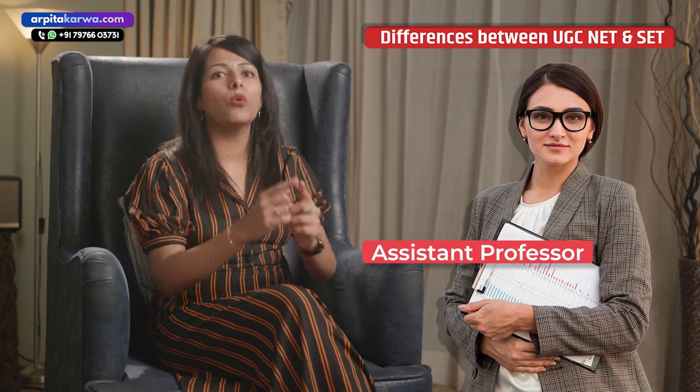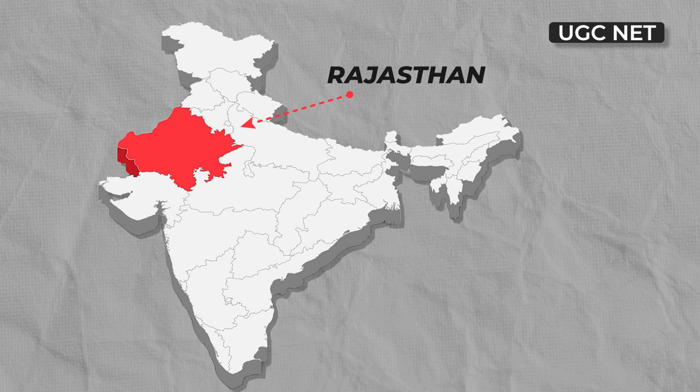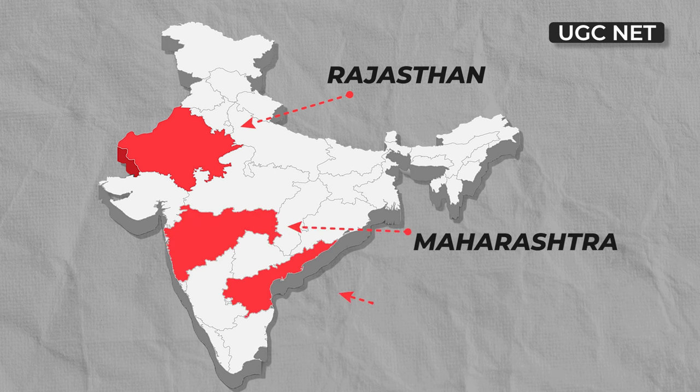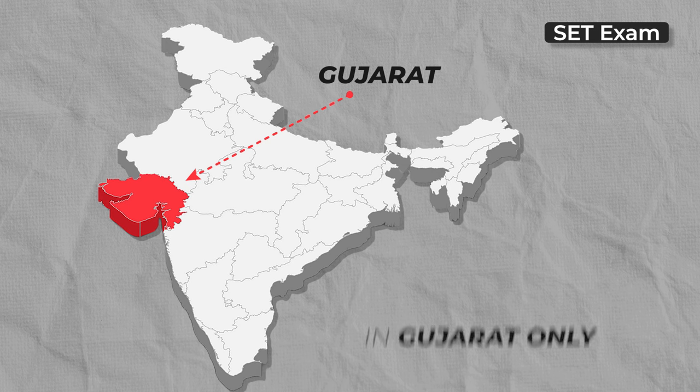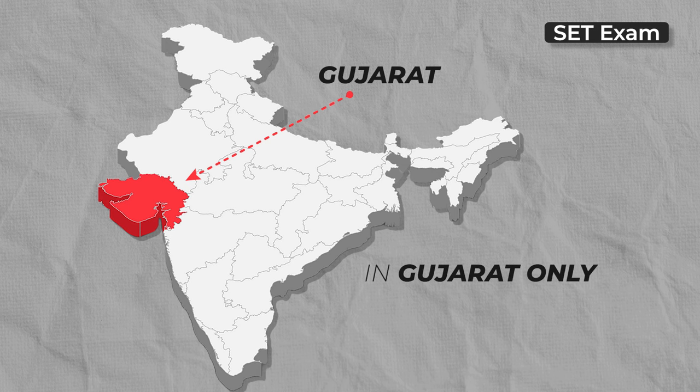Now let's look at the differences between NET and SET. The major difference is scope. NET is a national-level exam — after clearing NET, you can apply for the post of assistant professor in any college or university throughout the nation. For example, if I cleared UGC NET from Jaipur in Rajasthan, I can apply for assistant professor posts in any state — Maharashtra, Madhya Pradesh, or any other. On the other hand, the SET exam only permits you to apply in the state in which you cleared your exam. For instance, if I cleared the SET exam of Gujarat, I am only eligible to apply for posts in Gujarat.